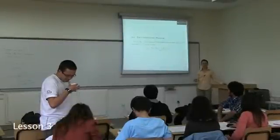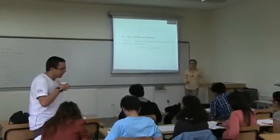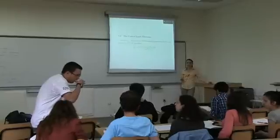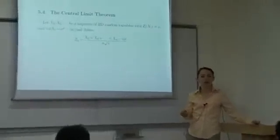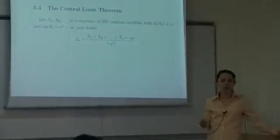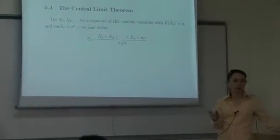Alright, so last time, last hour, we used the Chebyshev inequality to bound the number of people to get a lower bound on the number of people to poll such that our error will be within a certain bound with sufficient probability.